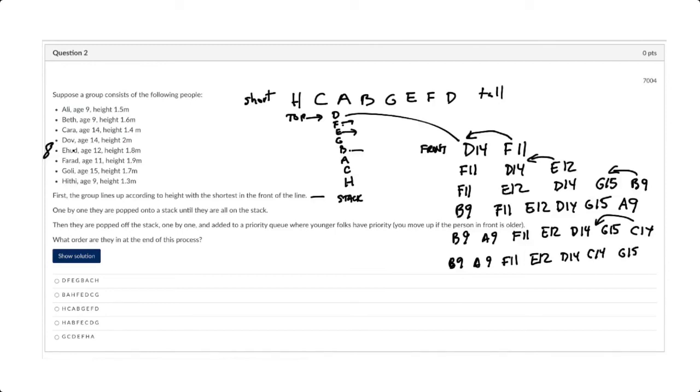And finally, Hithy comes in, and Hithy is age 9. So Hithy at 9 here is going to get to move up, up, up, up, up, but is going to be behind Allie. So I've got B9, A9, H9, F11, Ehud at 12, Dove at 14, Kara at 14, and Gully at 15.